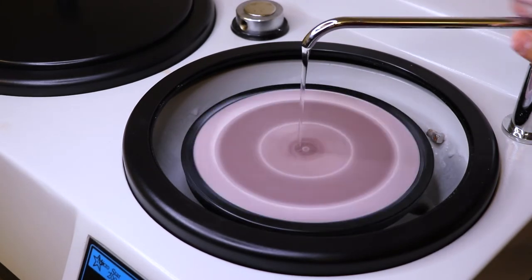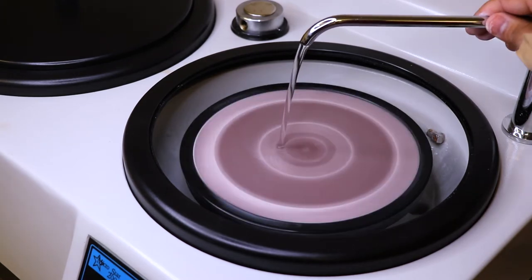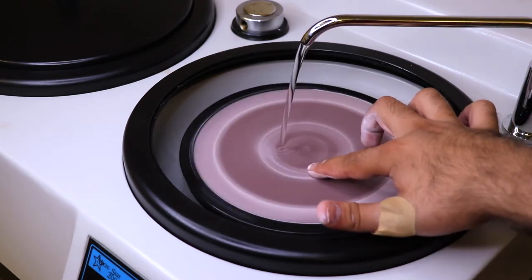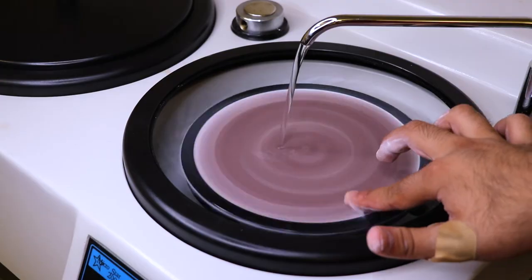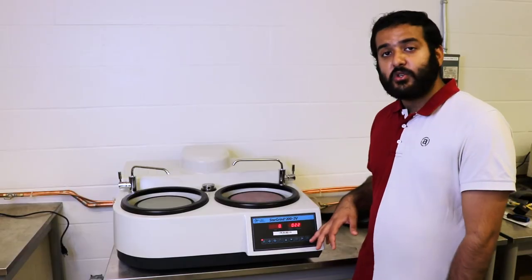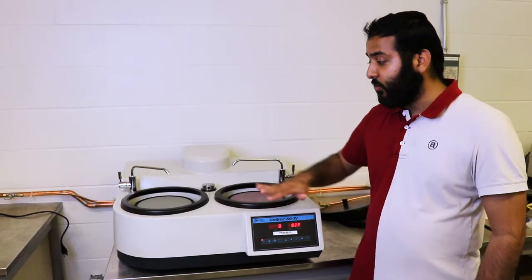You can also run this while you're polishing your sample, so that anything that comes off your sample is cleaned immediately. In either case, you clean the machine just do that once or twice. You can even take a damp cloth and wipe down any areas that the water can't get to.